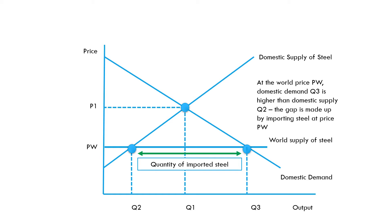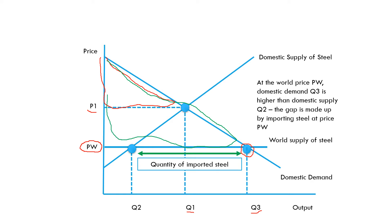So to summarise: we started off with our market at P1 and Q1. We then opened up to world free trade and our market was flooded with cheap imported steel at price Pw. This was great for consumers, who could now consume Q3. Looking at consumer surplus, originally it was a smaller triangle, but it has grown quite dramatically and is now represented by a much larger green triangle — a huge increase in consumer surplus, because consumers can now buy a lot more steel at a lower price.